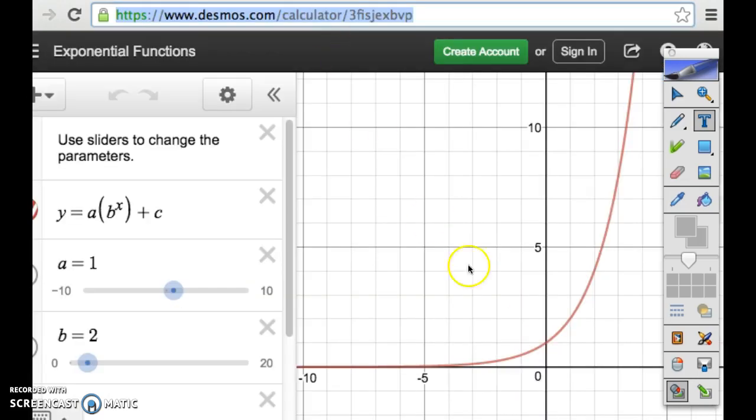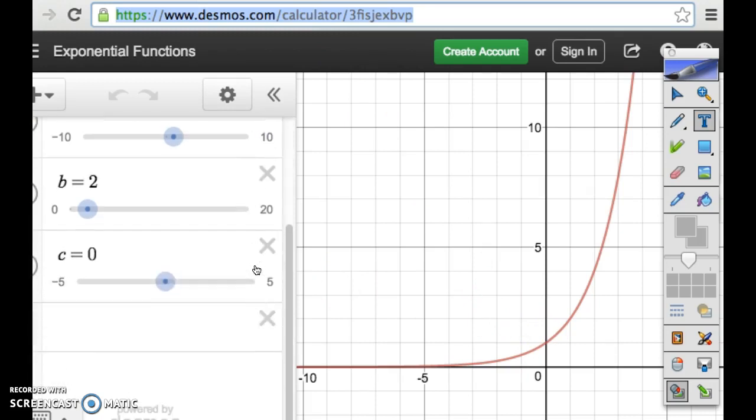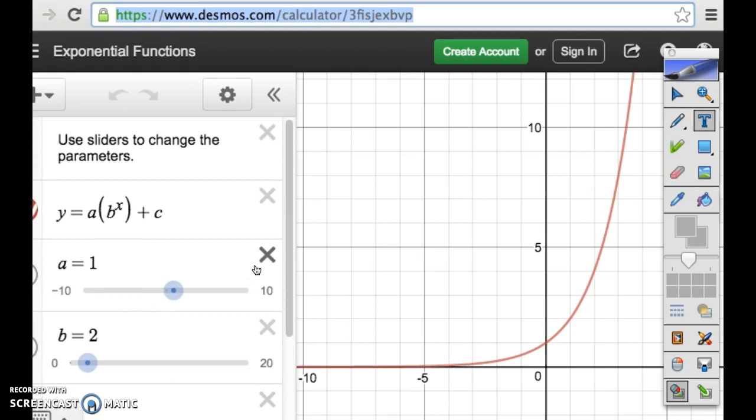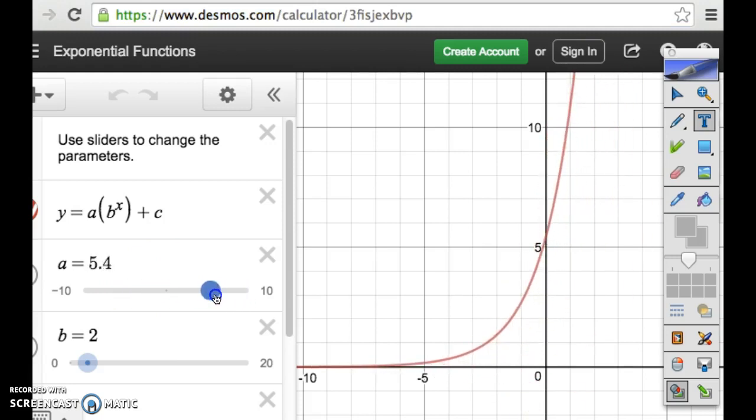I asked you to pull up the exponential and see what happens when we change things in the exponential. What happens when we change that a? Does it get steeper, right? It's still changing the shape. If we make it a decimal, is it going to stretch it out? Yes. So it's still stretching it out. What happens when we make it negative? It's still doing a reflection over the x-axis, right? That a is still reflecting over the x-axis.